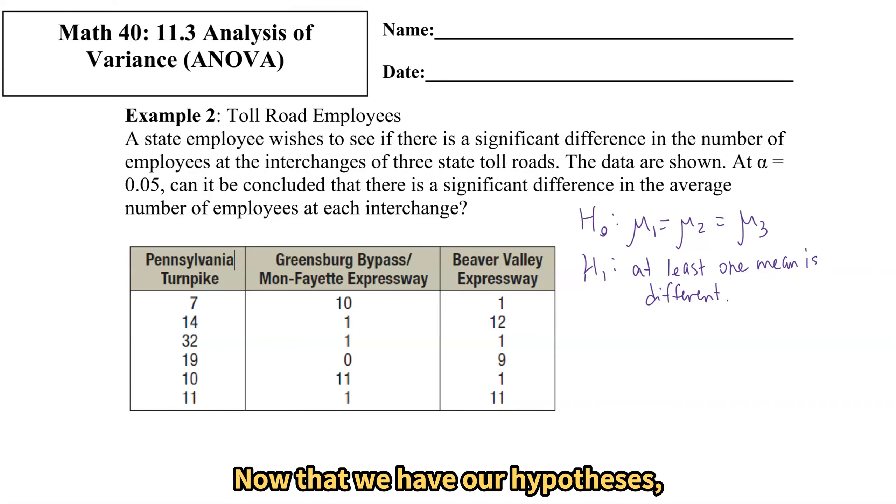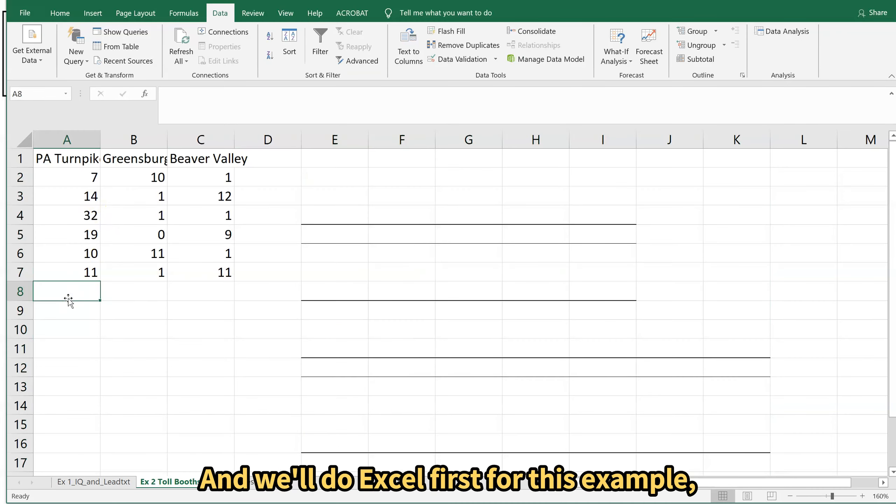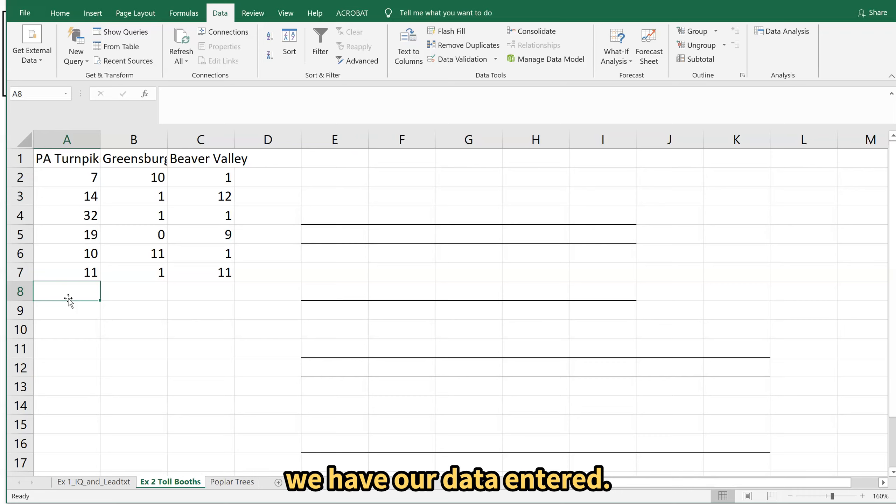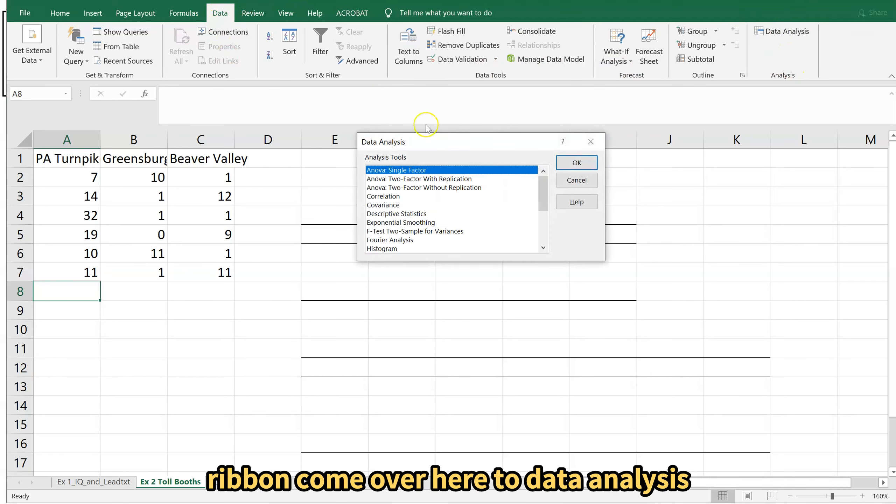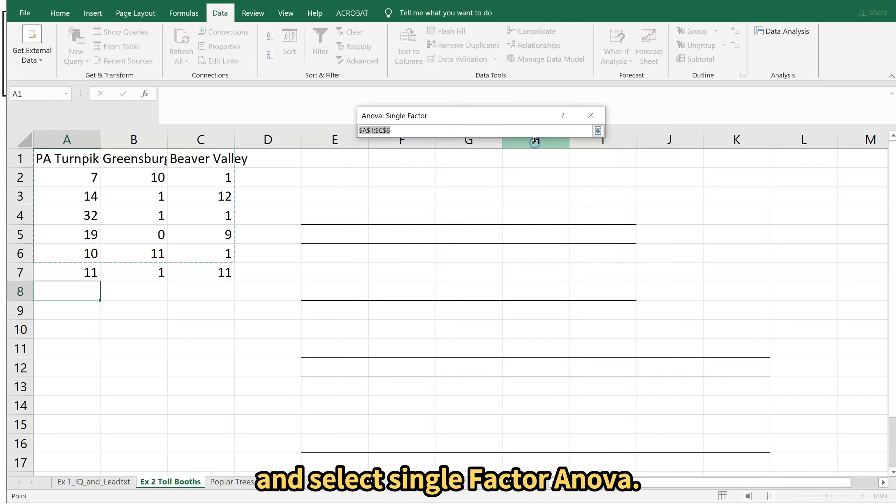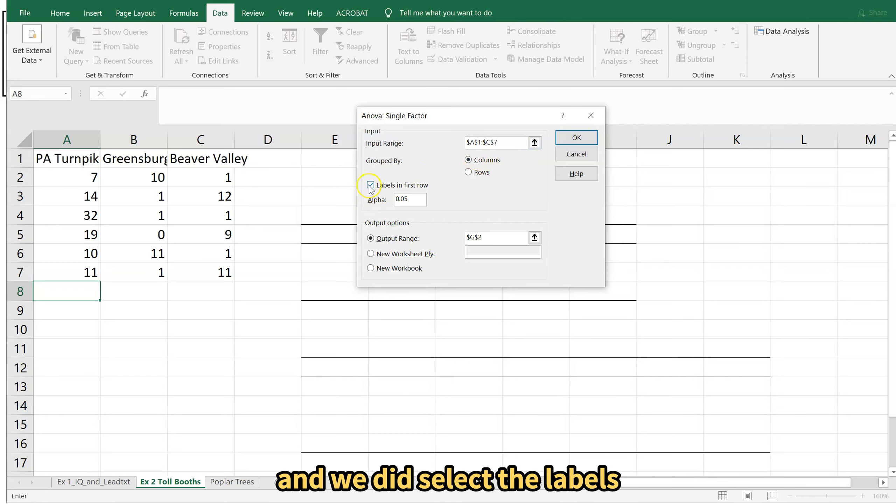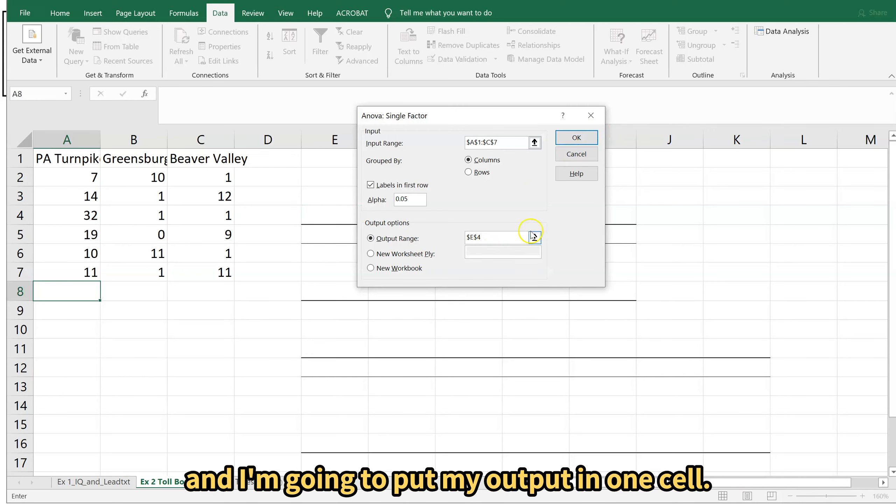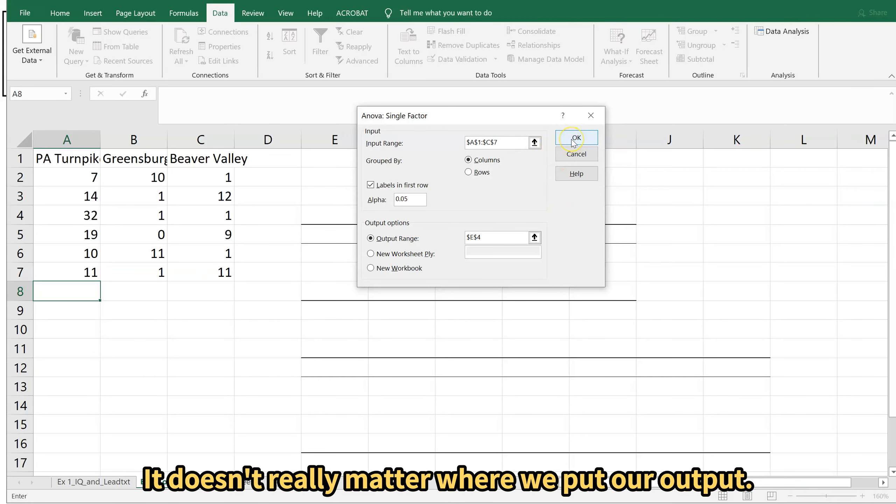And now that we have our hypotheses we can go to Excel and we'll do Excel first for this example and then do Google. Here we have our data entered we're going to make sure we're on the data ribbon come over here to data analysis and select single factor ANOVA. Our data make sure we grab all of it. Our data is grouped by columns and we did select the labels. Alpha is 0.05 and I'm going to put my output in one cell and then click OK.